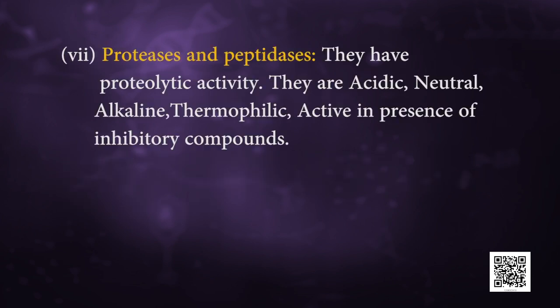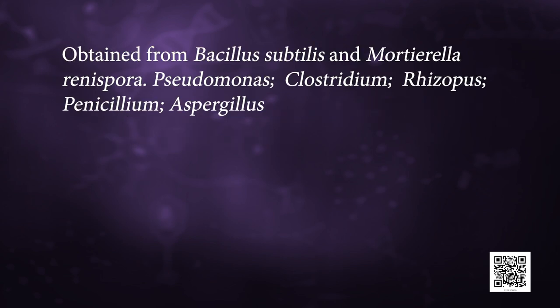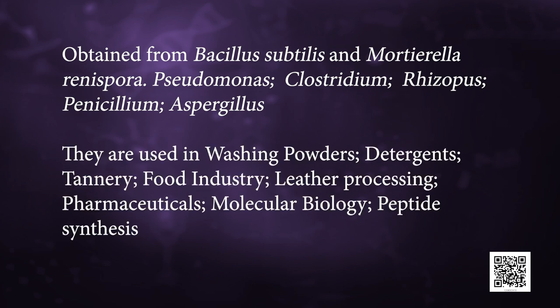Next is proteases and peptidases. They have proteolytic activity. They are acidic, neutral, alkaline, thermophilic, and active in the presence of inhibitory compounds. They are obtained from Bacillus subtilis, Mortierella renisophora, Pseudomonas, Clostridium, Rhizopus, Penicillium, and Aspergillus. They are used in washing powders, detergents, food industry, leather processing, pharmaceuticals, molecular biology and peptide synthesis.